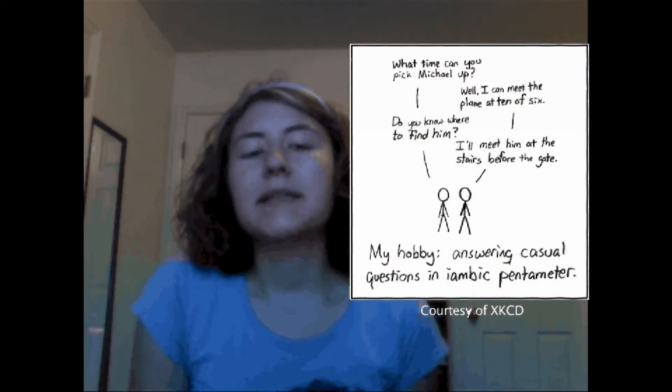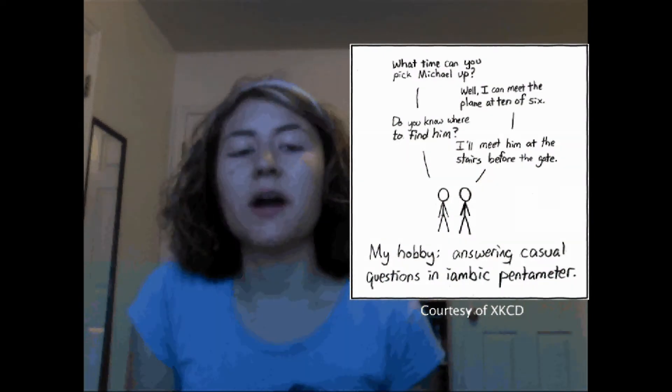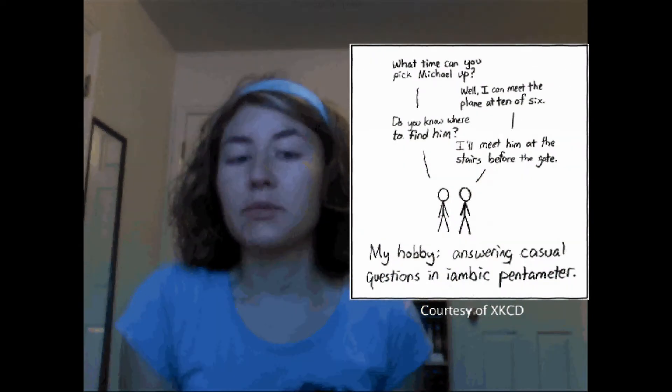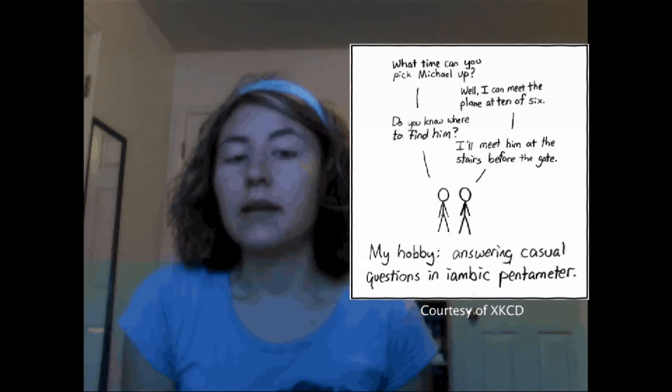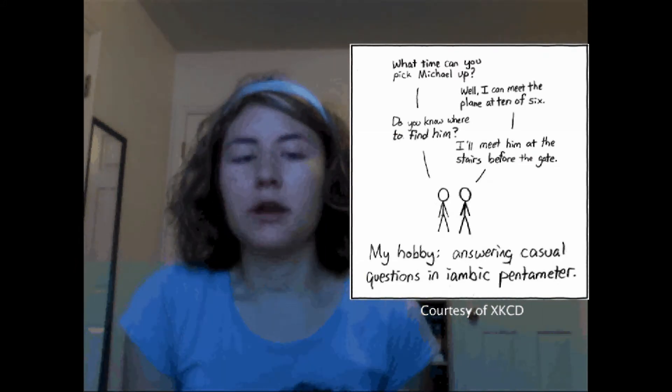My mistress's eyes are nothing like the sun. Coral is far more red than her lips red. If snow be white, why, then her breasts are dun. If hairs be wires, black wires grow on her head. I have seen roses damasked red and white, but no such roses see I in her cheeks. And in some perfumes there is more delight than in the breath that from my mistress reeks. I love to hear her speak,